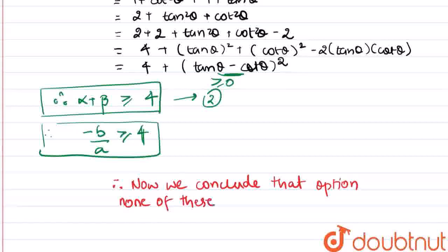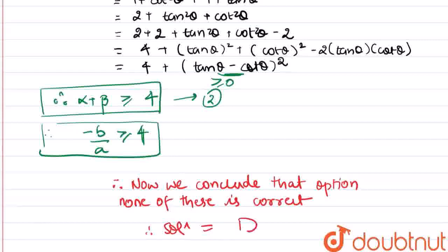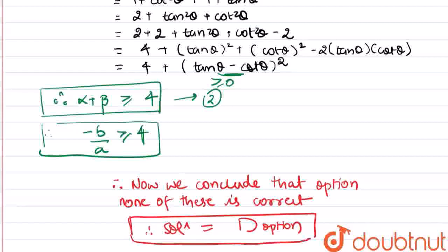So we conclude that none of these options is the correct one that is not a quadratic equation with these roots. Therefore the solution for this question is option D — None of these.